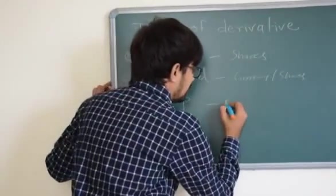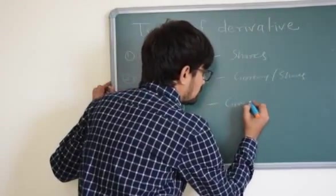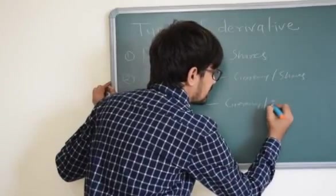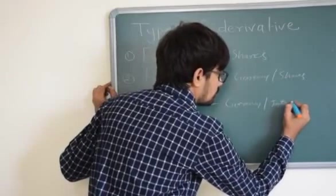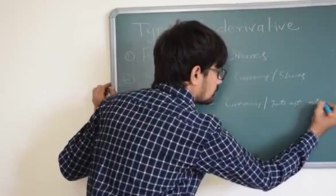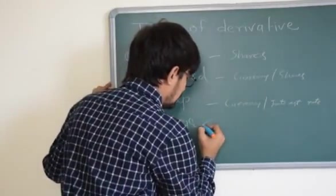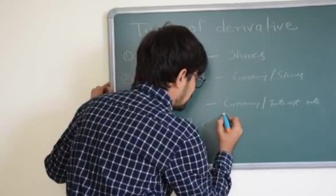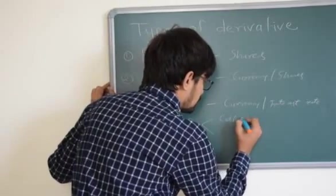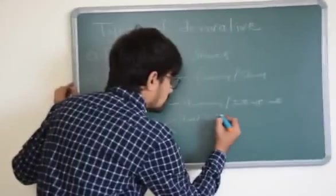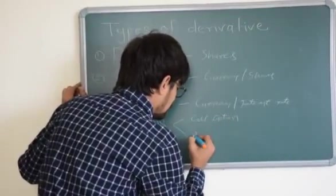Swaps are generally used for currency swap or interest rate swap. And options are generally of two types. These are again used in share market. One is call option, and second one is put option.